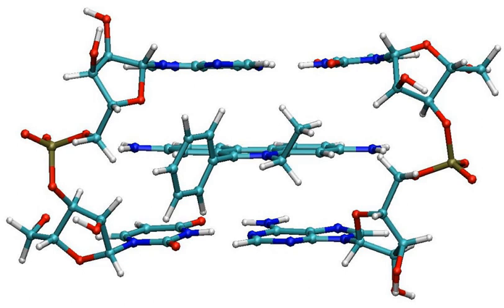Intercalation occurs when ligands of an appropriate size and chemical nature fit themselves in between base pairs of DNA. These ligands are mostly polycyclic, aromatic, and planar, and therefore often make good nucleic acid stains.